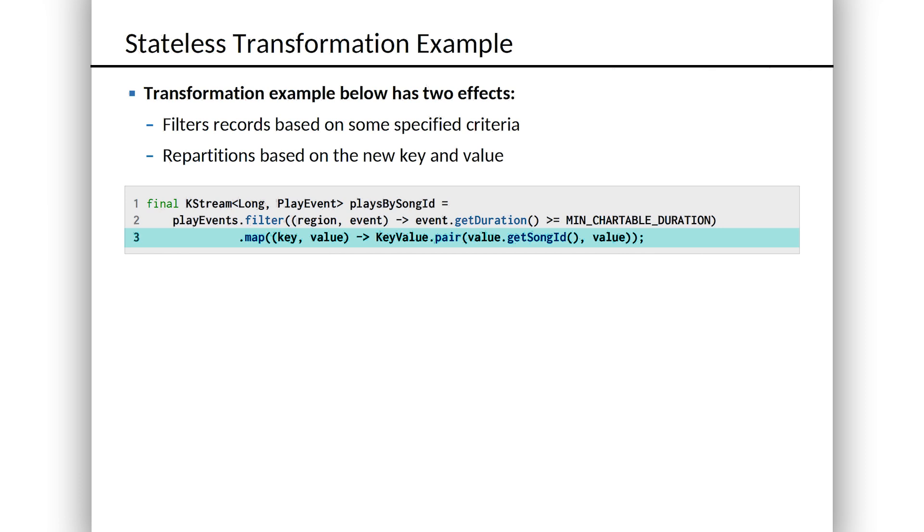You probably don't want to join based on region or anything like that. You might be more interested in a stream that's partitioned by song ID. That seems to make more sense. You could do that with the map method.